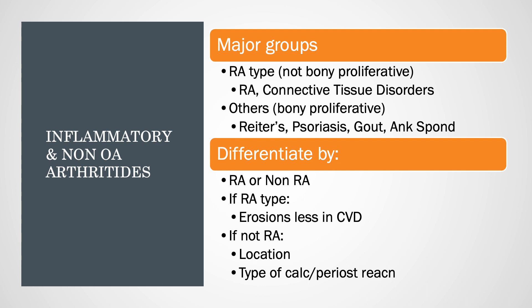For inflammatory, non-osteoarthritic arthritis, there are two major groups: the rheumatoid type, which includes rheumatoid arthritis and connective tissue disorders, and the other types including Reiter's, psoriasis, gout, and ankylosing spondylitis. If something falls into the rheumatoid category, we decide based on erosions whether it fits mixed connective tissue disorder or rheumatoid. If not, we use location, calcifications, and periosteal reactions to differentiate.